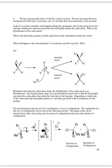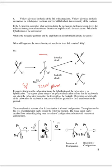Regarding stereochemistry of SN1: the carbocation intermediate is trigonal planar and sp2 hybridized, so the nucleophile can add from either face. Starting with a stereocenter and going through the trigonal planar intermediate, you get both front-side and back-side attack products — one retaining configuration and one with inversion. You get roughly equal amounts of both, close to a one-to-one ratio.